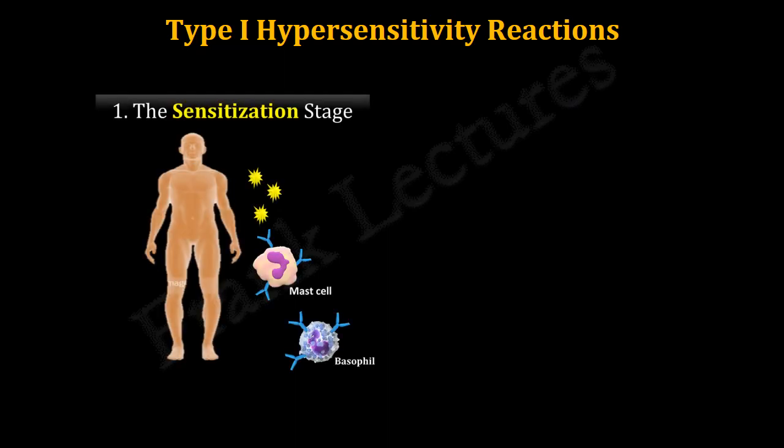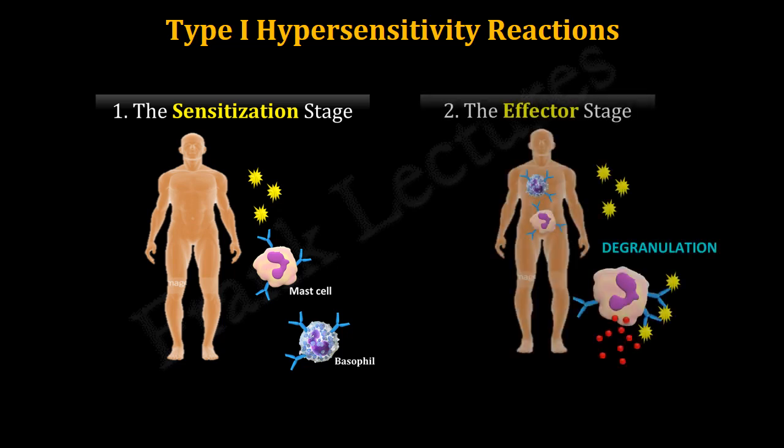In this video lecture, we understood that type 1 hypersensitivity reactions develop in two stages. In the sensitization stage, IgE antibodies are produced on first exposure to the allergen, and these antibodies bind to the Fc receptors of mast cells and basophils. In the effector stage, when the same allergen is encountered again, the sensitized mast cells and basophils degranulate, and the mediators released cause tissue damage.